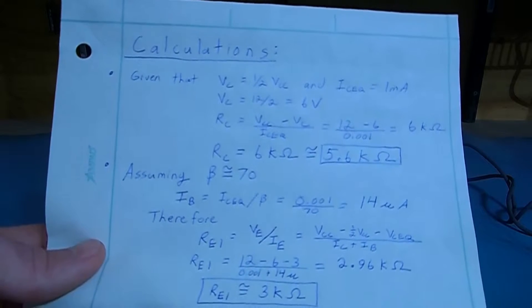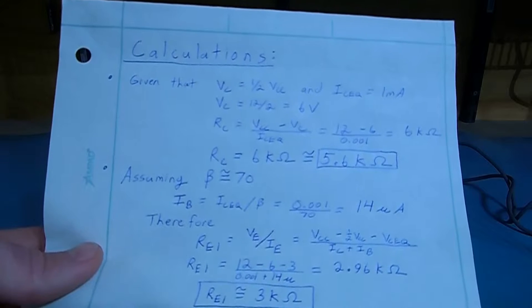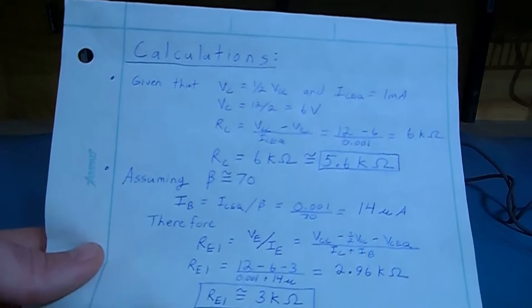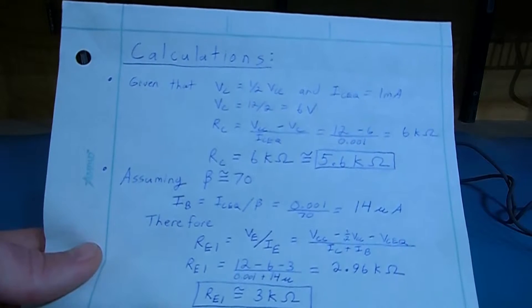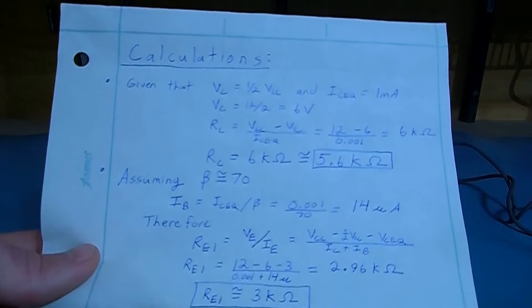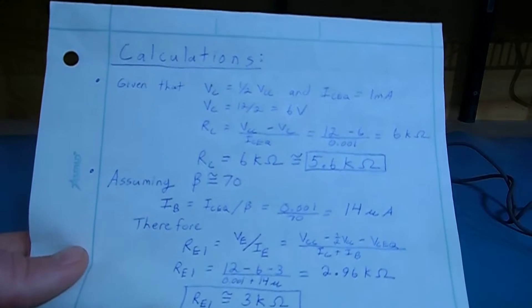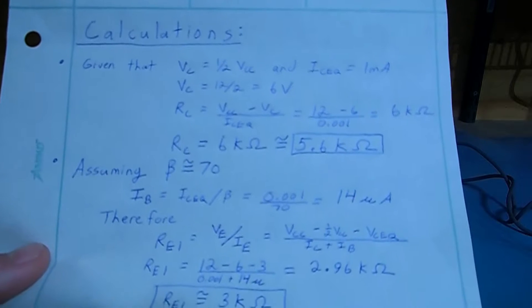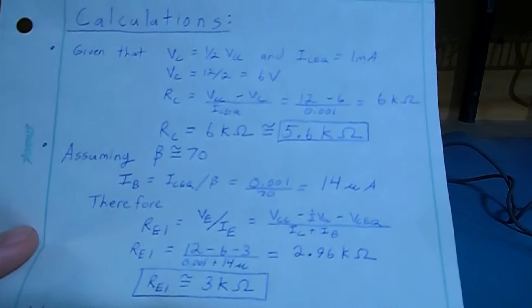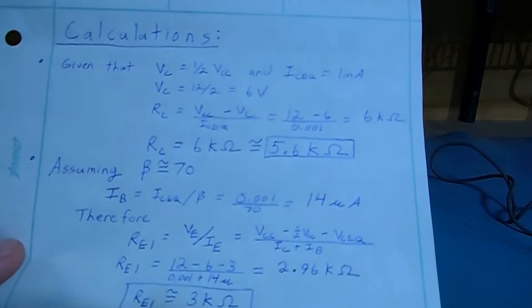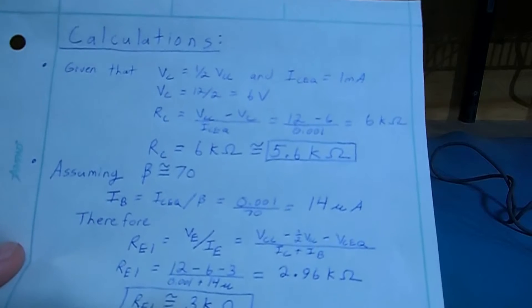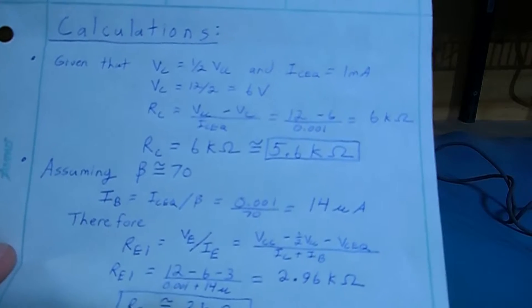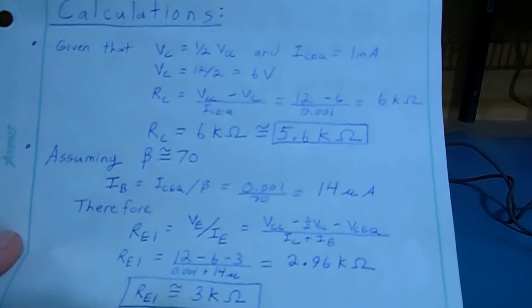Therefore, we can take our emitter voltage and divide by our emitter current, which now we know both of those numbers because we have emitter voltage, it's simply collector voltage, subtract our collector to emitter voltage that we chose as 3 volts, now we have 6 volts minus 3 volts, and divide that by our collector current plus our base current.